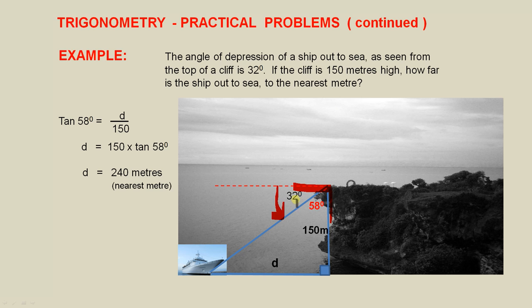Because 90 minus 32 is 58. So we use this information, the 58 degrees, the d, and the 150. And that's going to help us find this distance here.